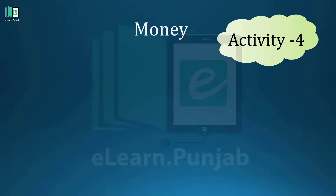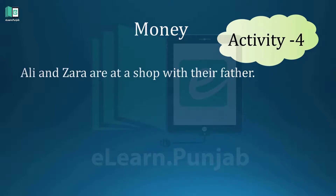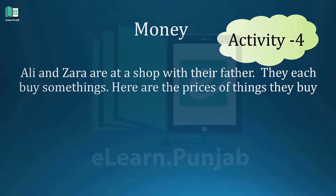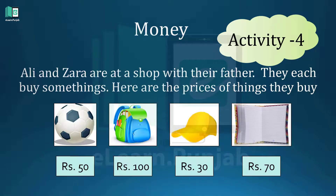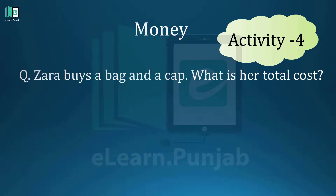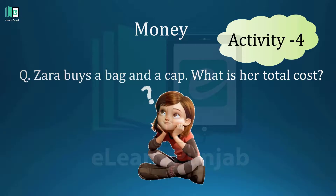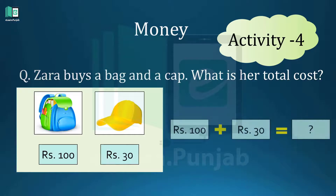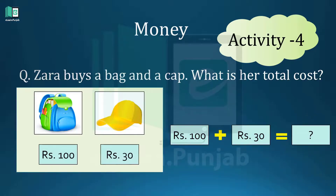Activity four. Ali and Zara are at a shop with their father. They each buy some things. Here are the prices of things they buy — see the prices. Zara buys a bag and a cap. What is her total cost? Think about it and calculate the cost. The price of the bag is rupees one hundred and the price of the cap is rupees thirty. If you add one hundred and thirty rupees, what is the total cost? Total cost is rupees one hundred and thirty.